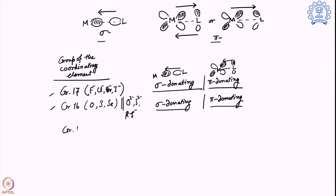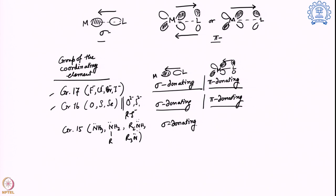Then comes group 15 — generally the amine systems, where only the lone pair of nitrogen is available. All kinds of amines — primary, secondary, tertiary — can only give one pair of electrons, which is from this lone pair, and that is the sigma donating orbital. There is no pi contribution at all, because there is no orbital present in ammonia or any of the amines where pi-symmetric orbitals can come and interact. So amine-based ligands show only sigma donation character.